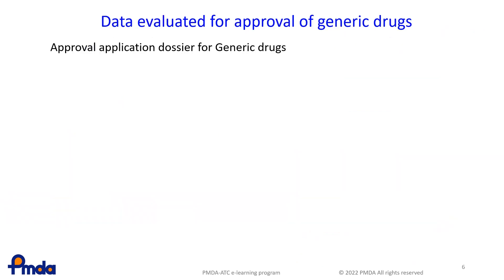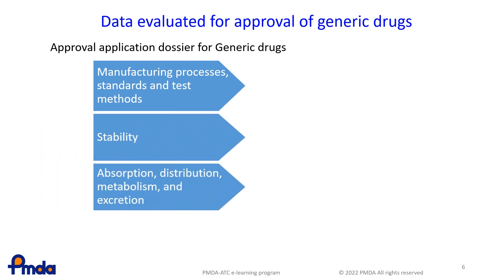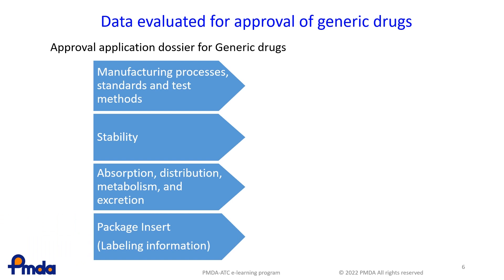For a generic drug approval application, manufacturing processes, specifications and analytical procedures, stability data, bioequivalence data, ADME data (absorption, distribution, metabolism and excretion), and the labelling information are reviewed. In addition, some additional data may be requested according to the product characteristics.